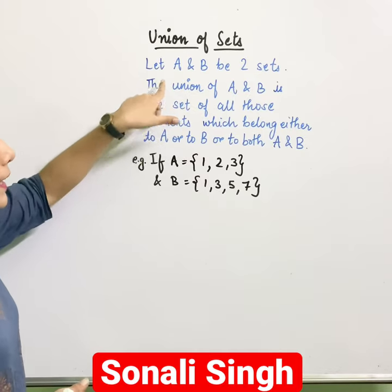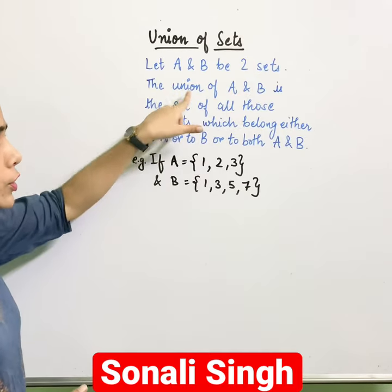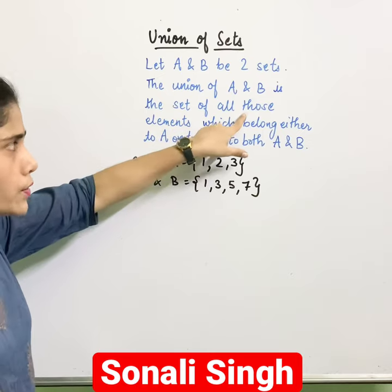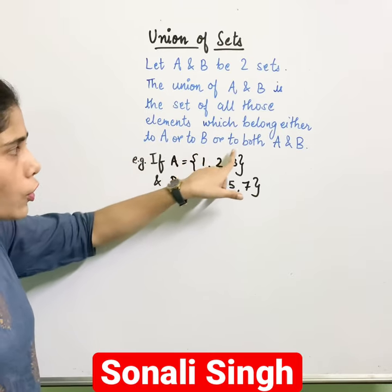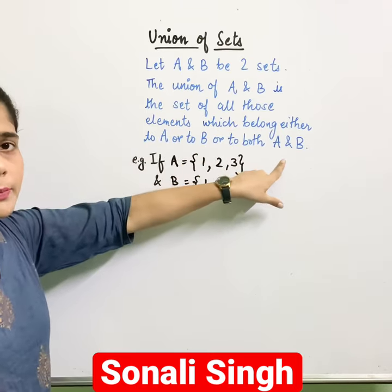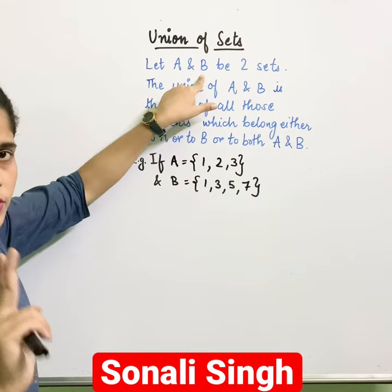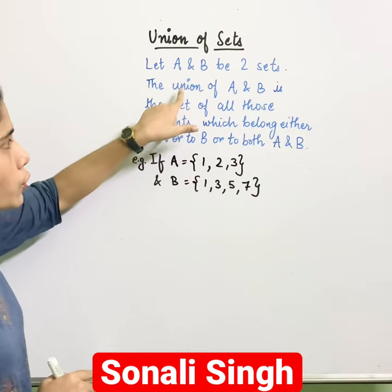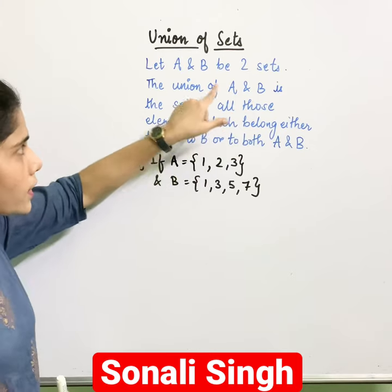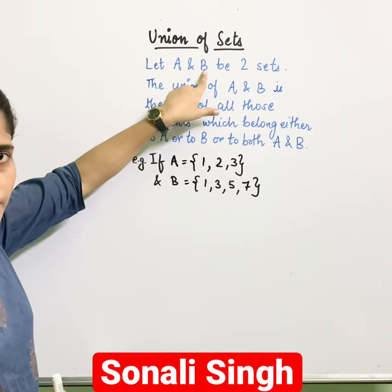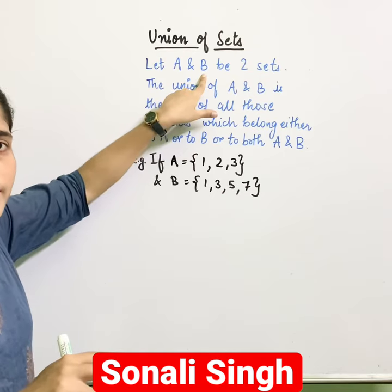What is union of sets? Let A and B be two sets. Then the union of A and B is the set of all those elements which belong either to A or to B or to both A and B. Means, agar A and B kohi doh sets hain, to union of A and B mein kaunse elements aajate hain? Jo ki ya toh A mein hoon, yaa phir B mein hoon, yaa phir A and B dono sets mein hoon.